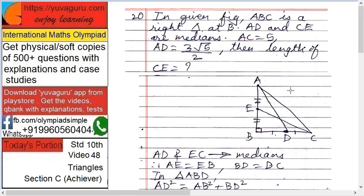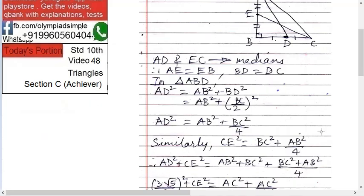So find the length of CE. See here. Firstly, AD and EC are medians. So AE equals to EB and BD equals to DC. Right.